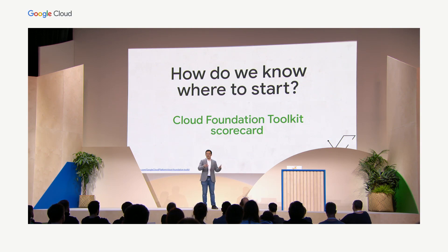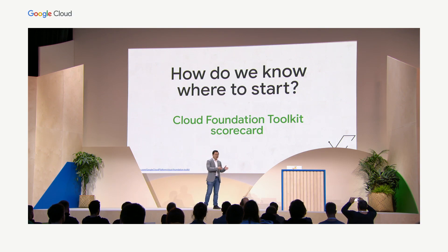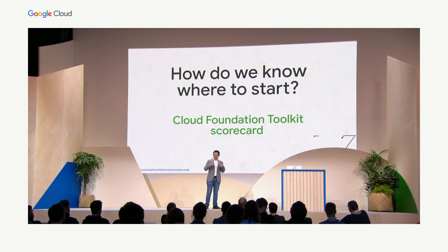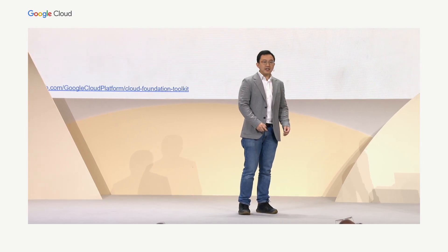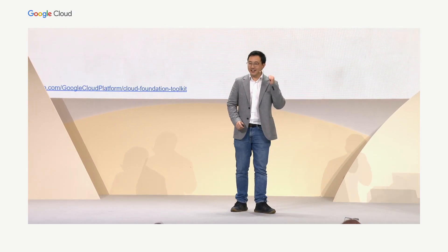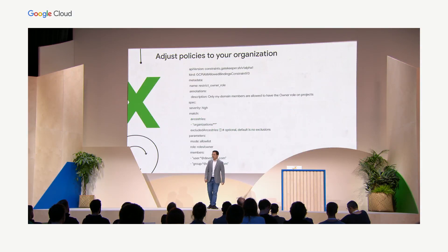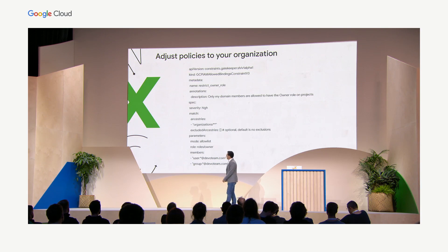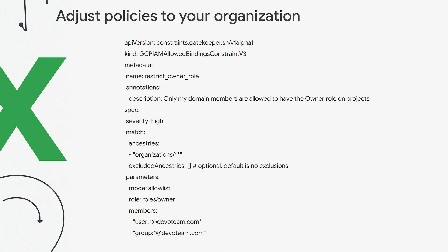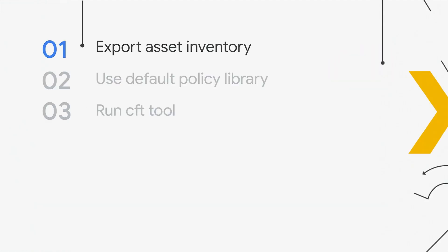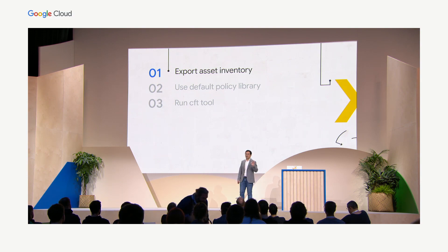Remember the scenario we came from: a large, sprawling cloud landscape with multiple projects fitting multiple use cases — POCs, sandboxes, production environments, staging environments — with teams in different countries building and delivering all the time for over 2,000 customers. How do we score ourselves on security? This is where the Cloud Foundation Toolkit Scorecard came in. You write what are called policies. This is a very typical policy you can download from the source repos — basically, anyone that's not devlog.com should never be an owner in your project. Very simple rule. There are three easy steps to check your cloud security posture today.